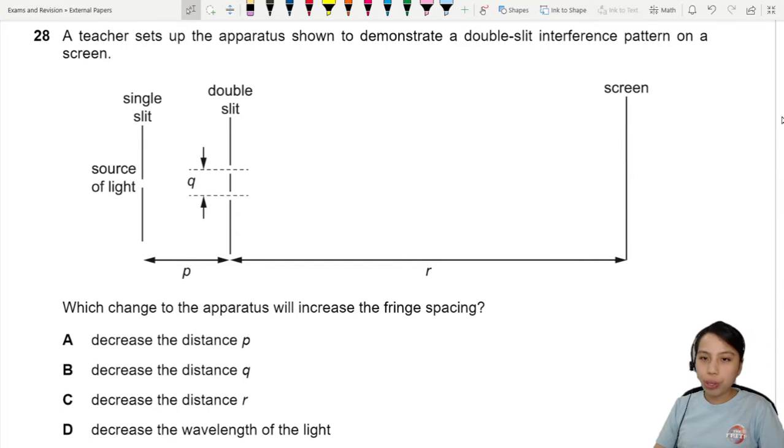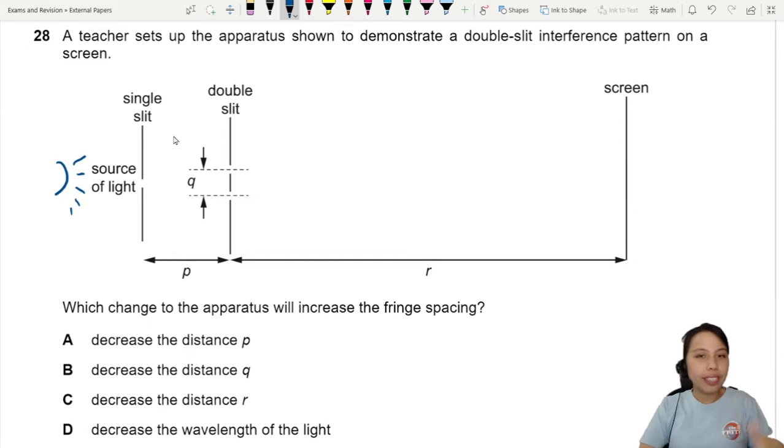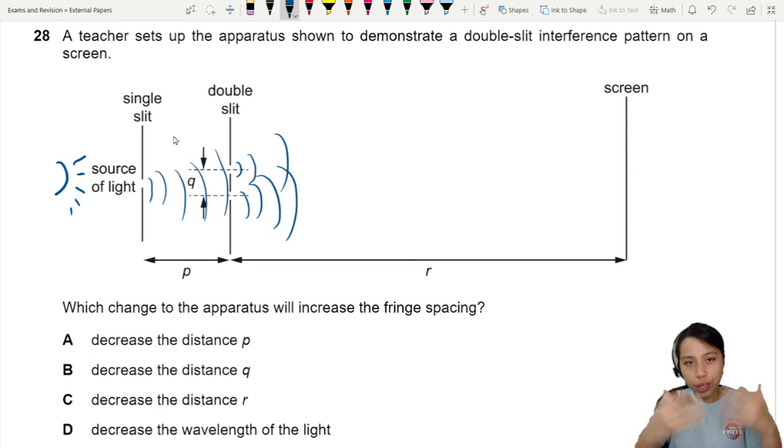A teacher sets up the apparatus shown to demonstrate a double slit interference pattern on the screen. So you're going to have a light source come in. They're going to go hit the double slit and that's where you have two waves to interfere with each other and make those bright, dark, bright, dark fringes.